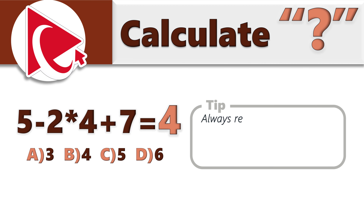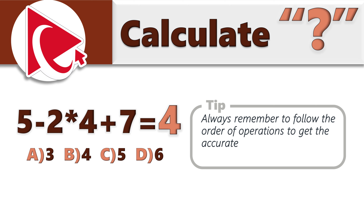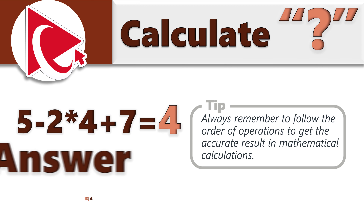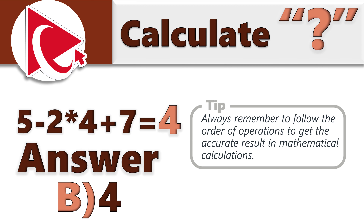Next step: minus 3 plus 7 equals 4. So the tip here is to always remember to follow the order of operations to get the accurate result in mathematical calculations. The correct answer here is choice B: 4.